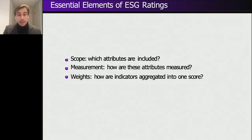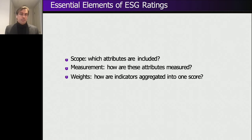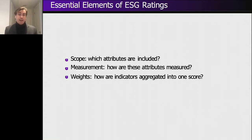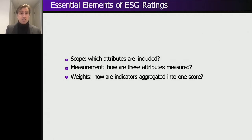In our previous paper, we explained this divergence as coming from three sources: scope, measurement, and weights. Scope refers to what indicator I measure — for example, do I include CO2 emissions or corruption? Weights refer to relative importance: if I include both corruption and CO2 emissions, how much weight do I give each? Because all ESG ratings in our sample are weighted averages of different indicators — some rating agencies have 40 indicators, others up to 284. This explains less than half of the divergence between ESG ratings.